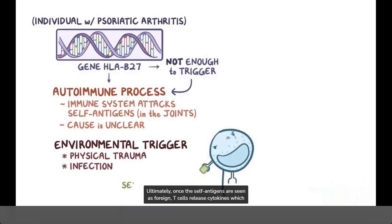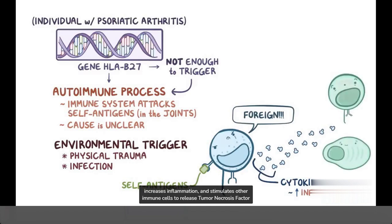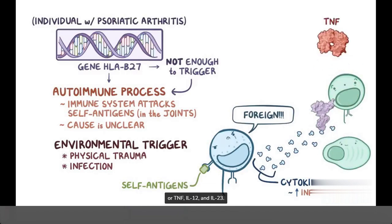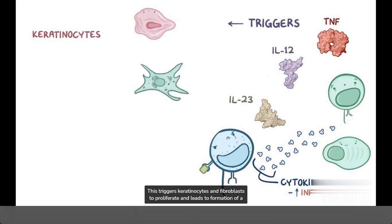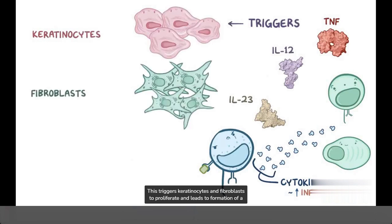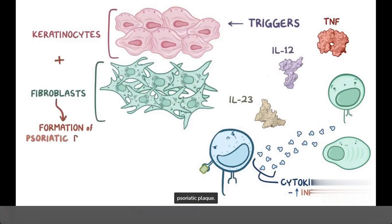Ultimately, once the self-antigens are seen as foreign, T cells release cytokines, which increases inflammation, and stimulates other immune cells to release tumor necrosis factor, or TNF, as well as interleukin-12 and interleukin-23. This triggers keratinocytes and fibroblasts to proliferate, and leads to formation of a psoriatic plaque.